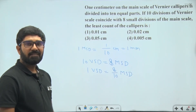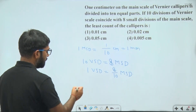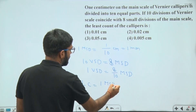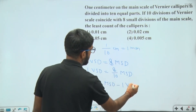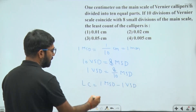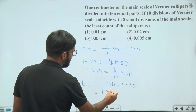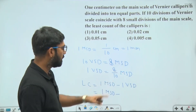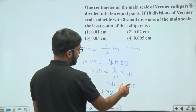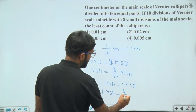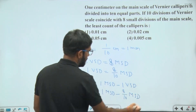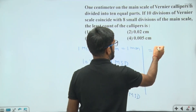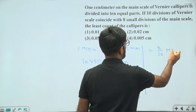Now we have to calculate the least count of vernier calipers, and we know the least count is given by 1 main scale division minus 1 vernier scale division. This will be equal to 1 MSD minus 1 VSD, which equals 8 by 10 main scale divisions. So in place of 1 VSD, we put 8 by 10 MSD, giving us 1 minus 8 by 10, which equals 2 by 10 MSD.